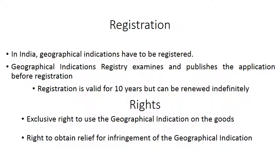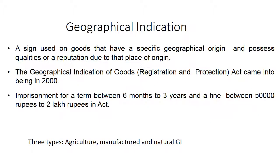GI registration: the registry examines and publishes the application before registration. Valid for 10 years. Rights are given exclusively to use GI on the goods and to obtain relief for infringement. The Geographical Indication Goods Act came into being in 2000. Imprisonment for a term between 6 months and 3 years, and a fine of Rs. 50,000 to Rs. 2 lakh, applies if the act is violated.